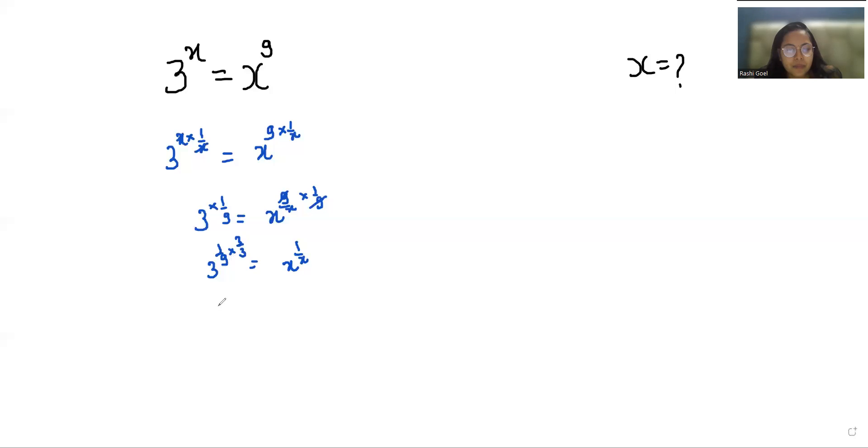So 3 power 3 by 27 equals x power 1 by x.